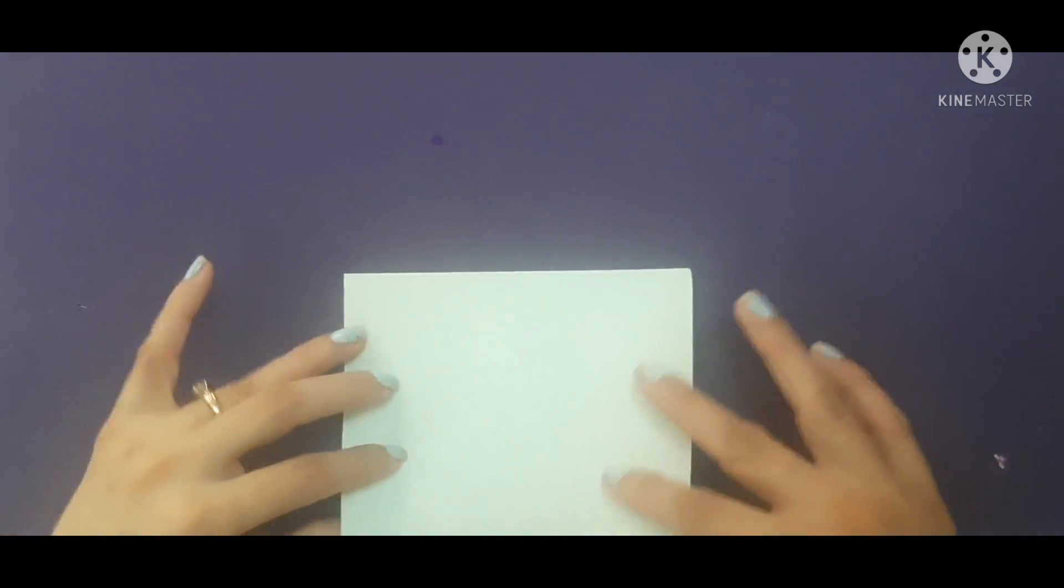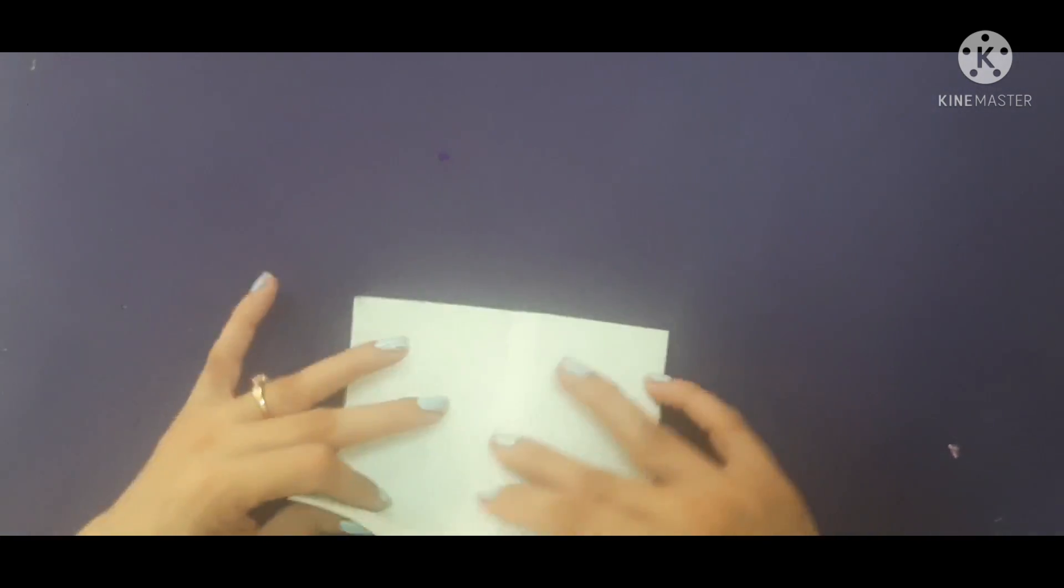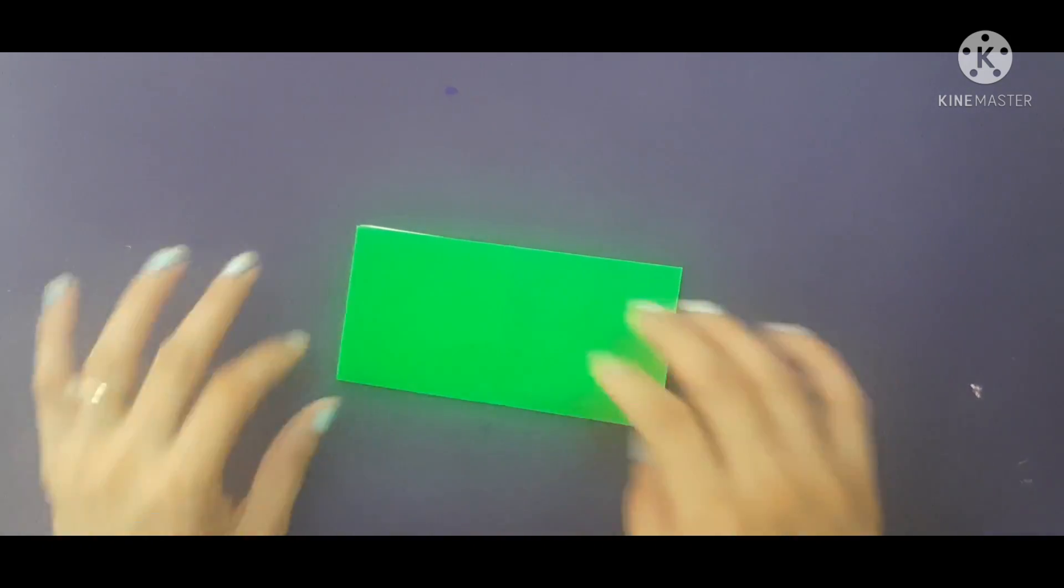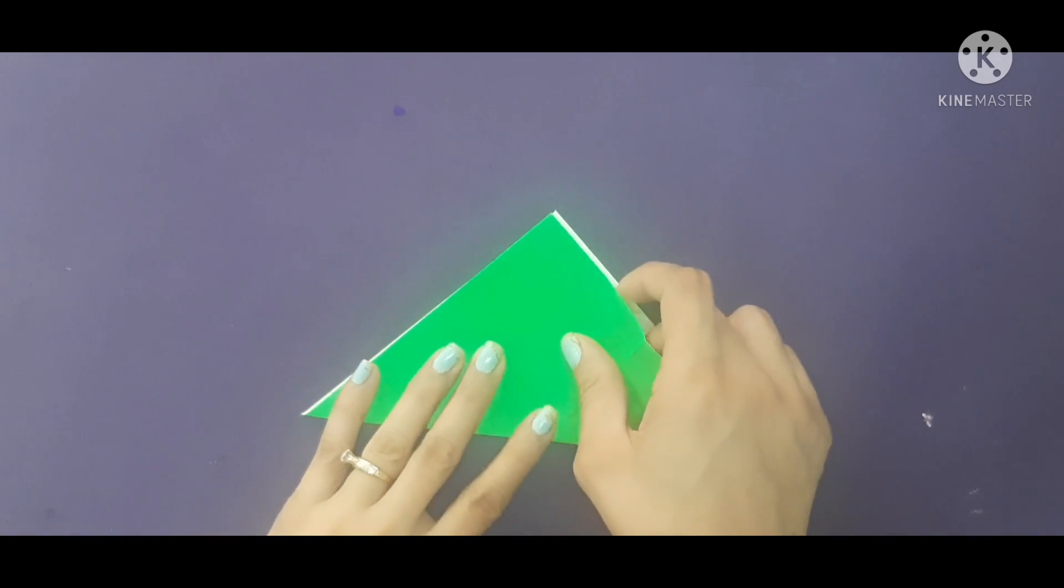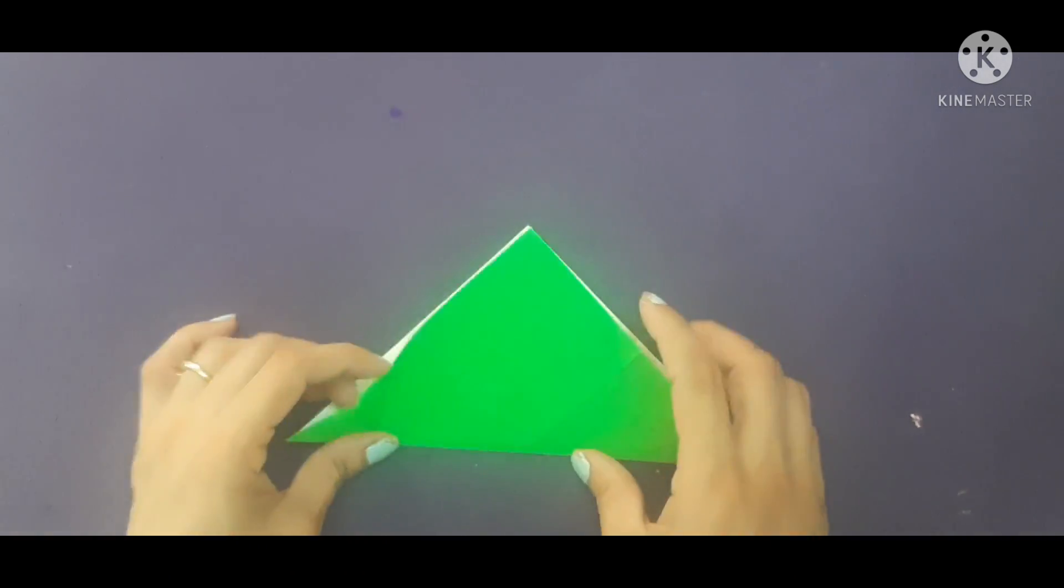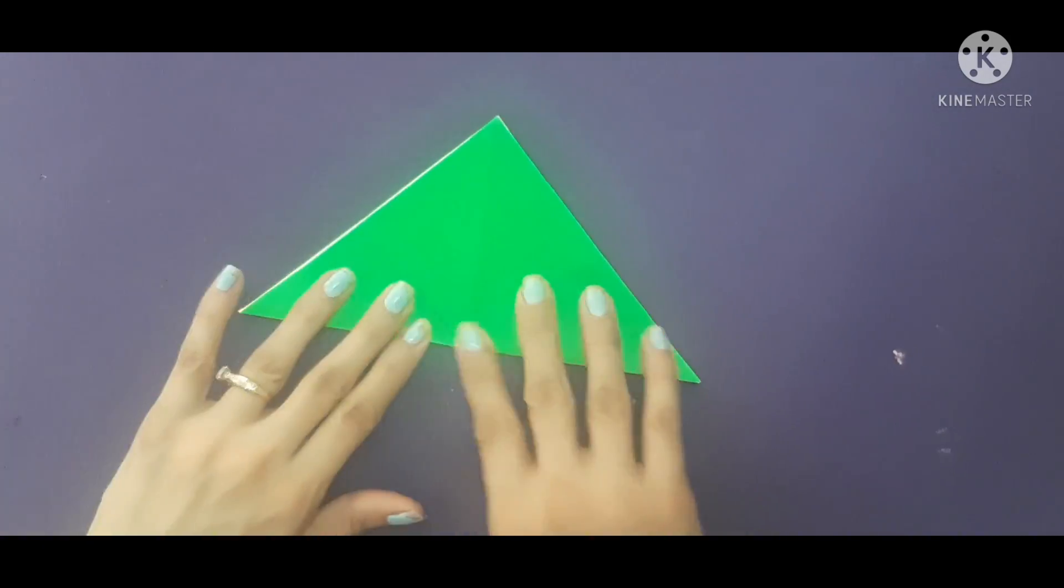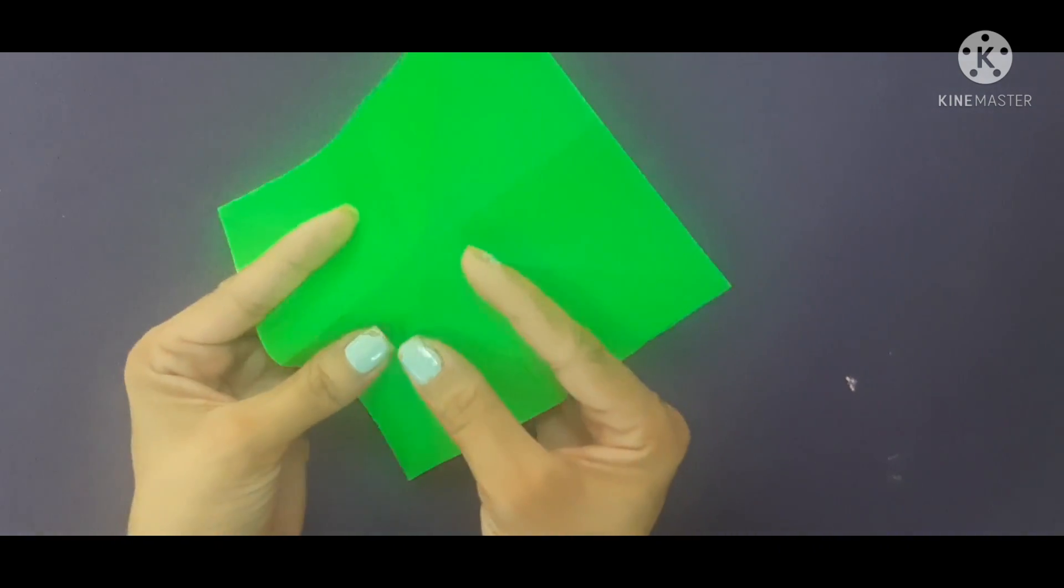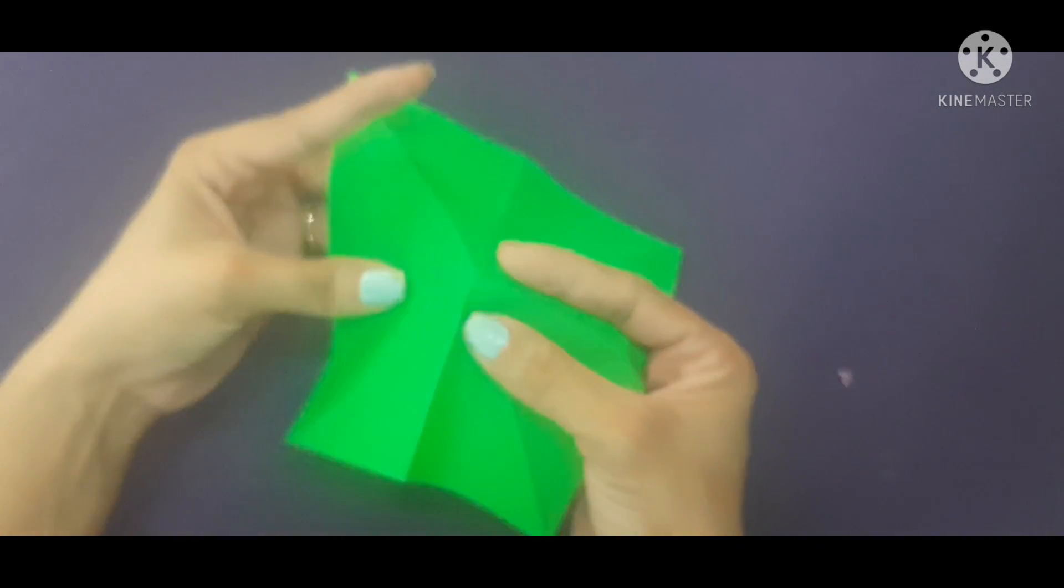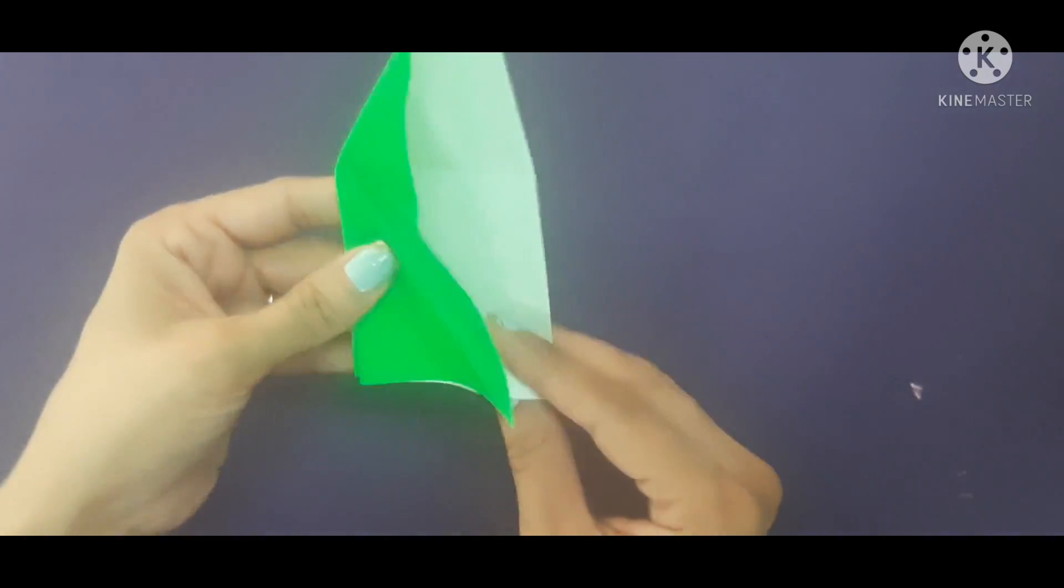What you have to do? Put paper like this. You have to make these lines on the paper. Now you have to make square from here. You fold from here. You have to get the square.